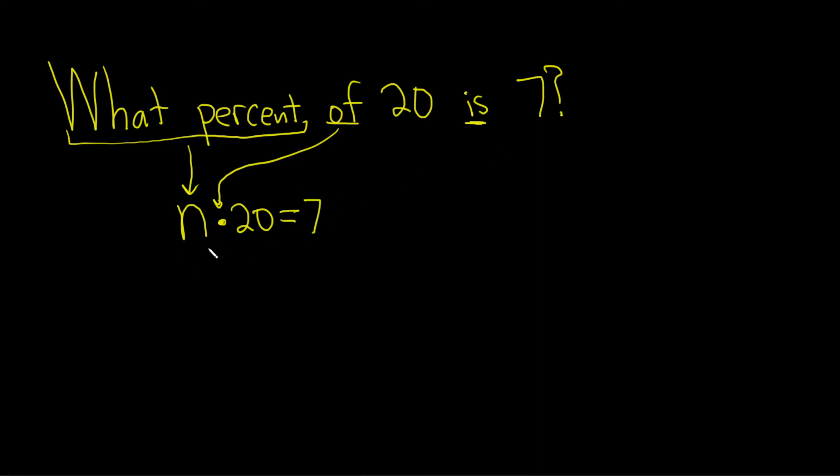So whenever you multiply a variable by 20 and you're trying to find the variable, you have to use division to get rid of the number. So what you do is you draw a line and you put a 20 here, and you draw a line here and you put a 20 here. And because these are the same, they cancel. So you just get n equals 7 over 20.